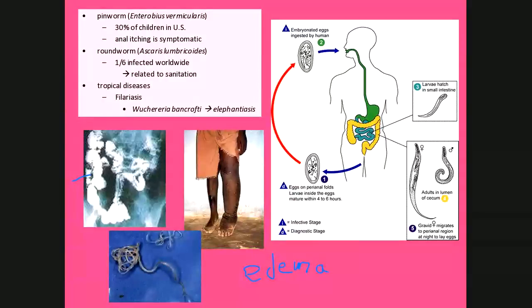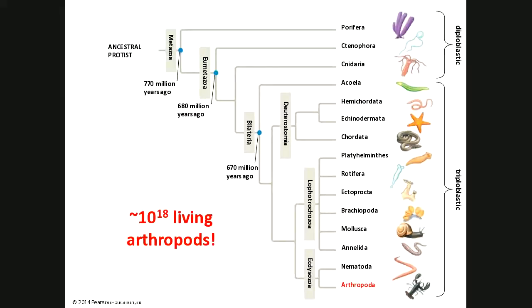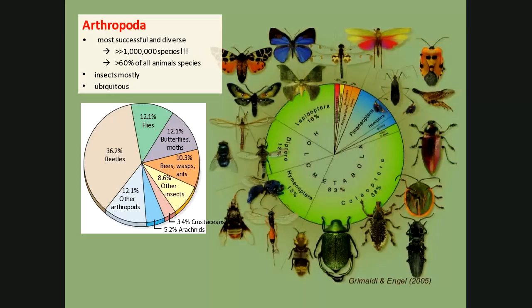The rest of lecture will be on arthropods. There are 10 to the 18th living arthropods on Earth right now. That includes not just insects but also millipedes, crustaceans, and all those critters. The arthropod group is extremely diverse — well over a million species, probably easily the most successful group, making up close to two-thirds of all animal species. Mostly insects, but diversity in other groups as well.